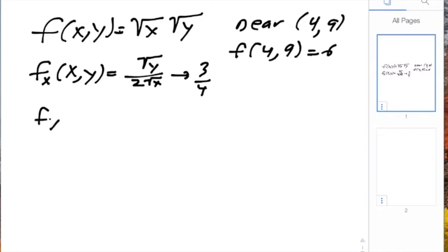Our partial with respect to y of f(x,y) is the square root of x over 2 times the square root of y, which for our point is going to go to 1 third.